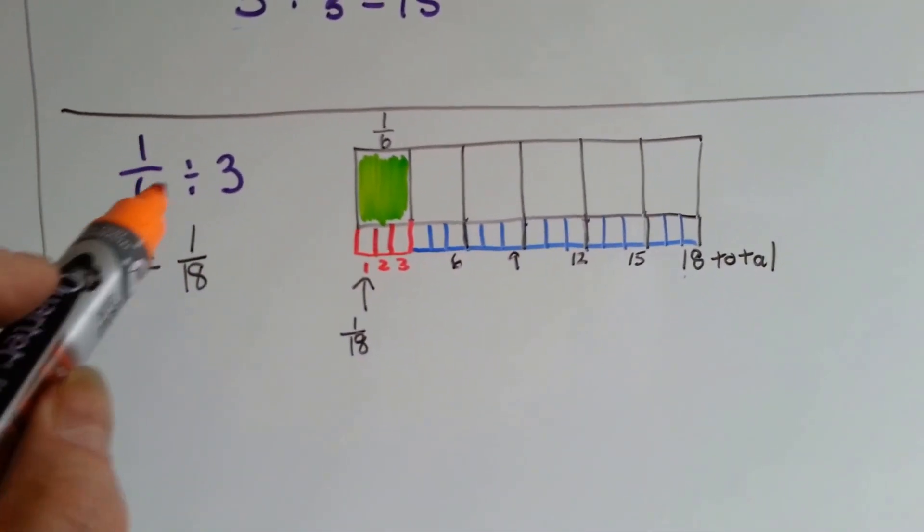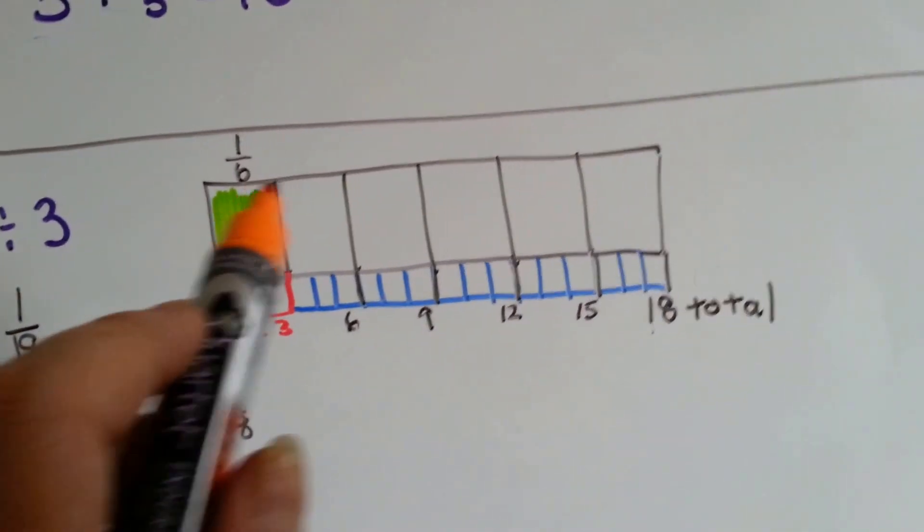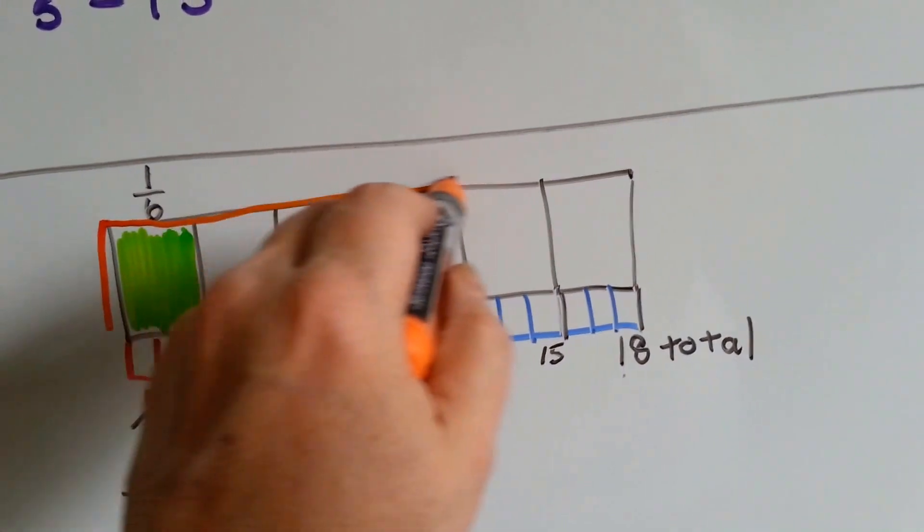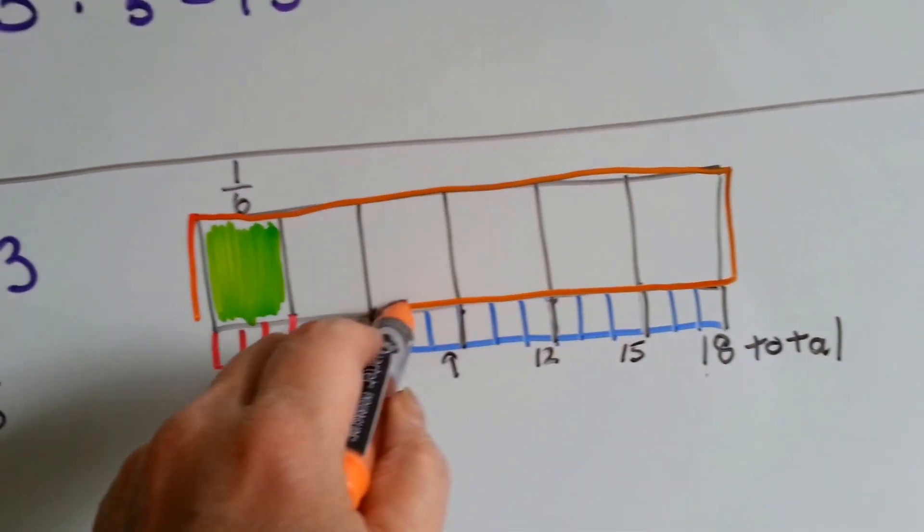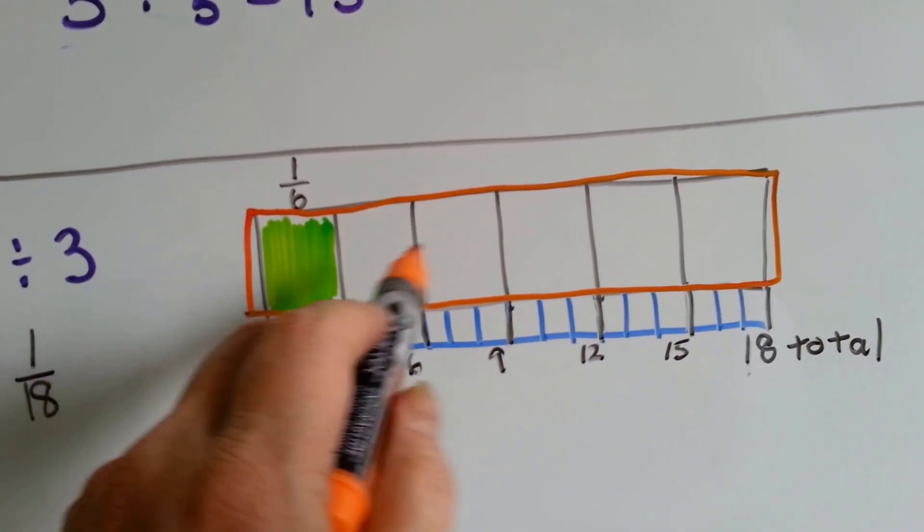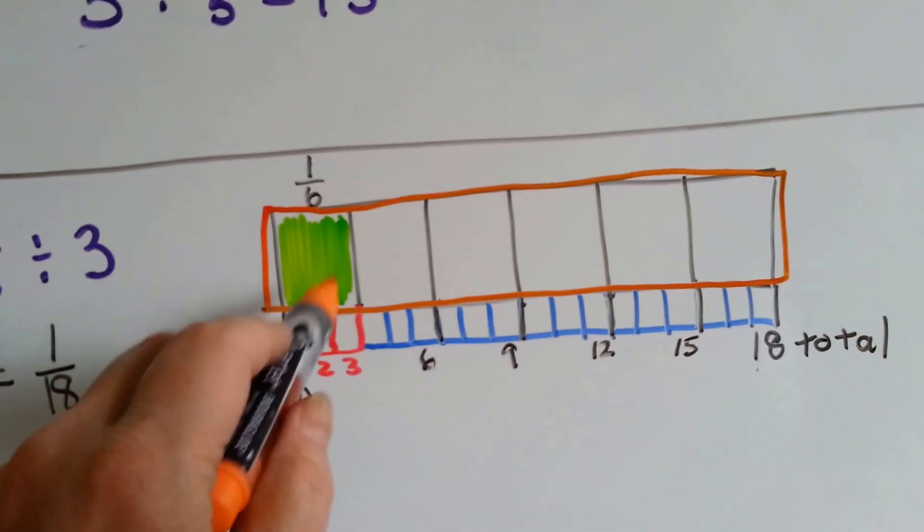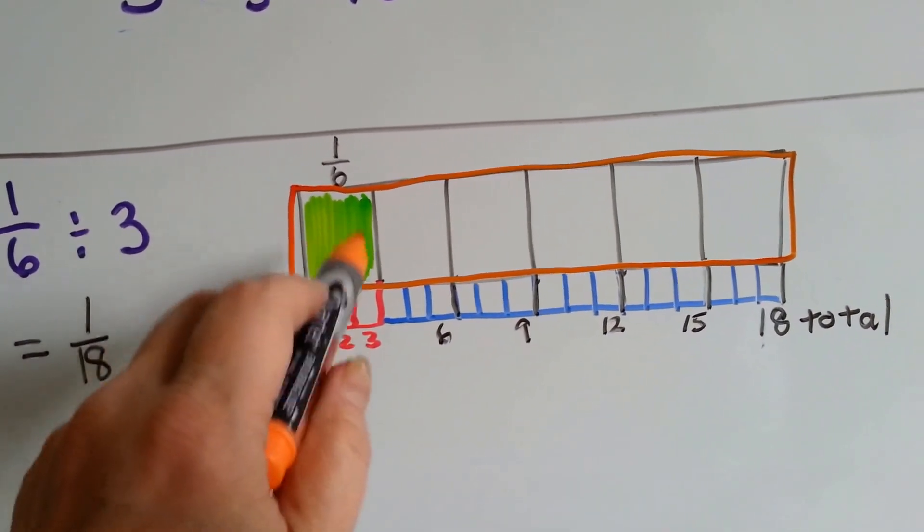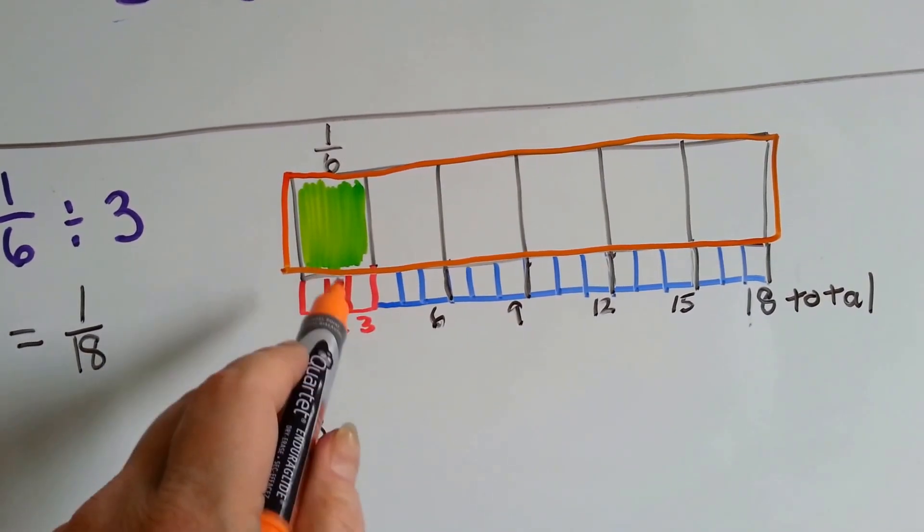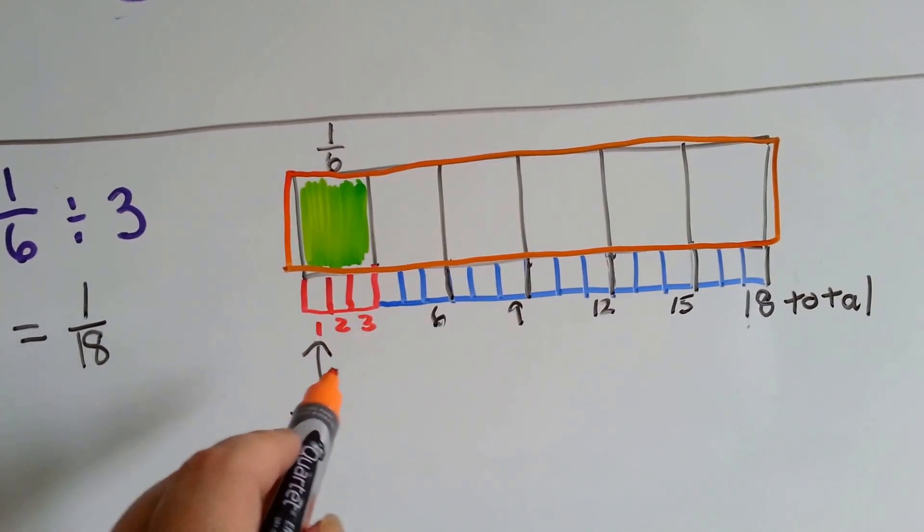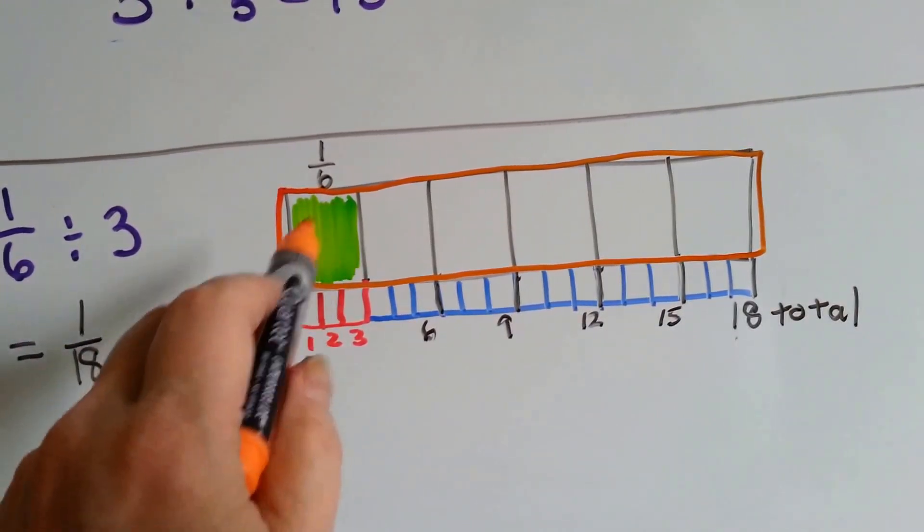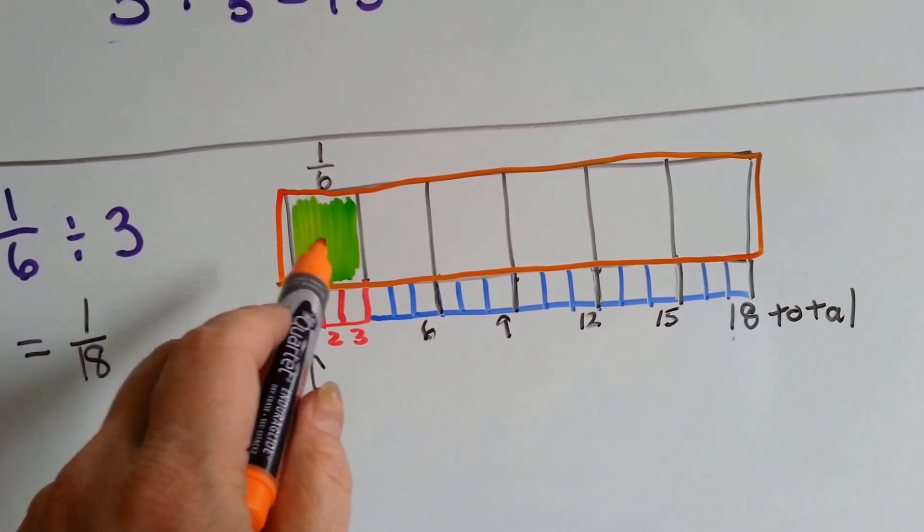Here we've got 1/6 divided by 3. So I made a bar right here that had been divided into 6 pieces. The green part is 1/6 colored in. So this is 1/6 of the bar. If I split this green bar part right here into 3 pieces, how much would 1 of them be? It's saying to take 1/6 and split it into 3. So this green part needs to be split into 3.